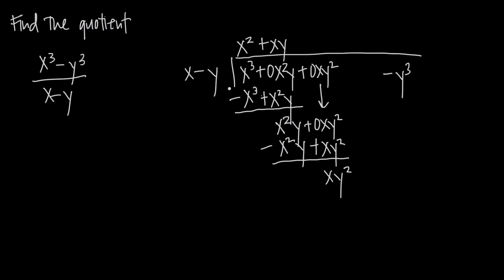Now we need to figure out what we have to multiply by x to get xy squared — that's just y squared. So we say plus y squared, and we multiply y squared by the whole divisor. y squared times x is xy squared, and y squared times negative y is negative y cubed. Now we need a y cubed term — fortunately, we already have it. We always have to remember that term hanging out, so we bring down the negative y cubed.